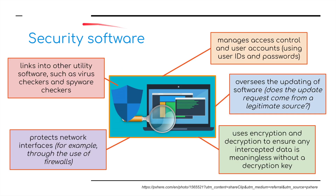Security software links into other utility software such as virus checking and spyware checking. It protects the network interfaces — for example, it uses firewalls — and manages access controls and user accounts with user IDs and passwords. It oversees the updating of software, checking whether updates are legitimate and from the actual authors of the software. It also looks after user encryption and decryption to ensure any intercepted data is meaningless without a decryption key, basically protecting the information you're sending across the network and receiving back.